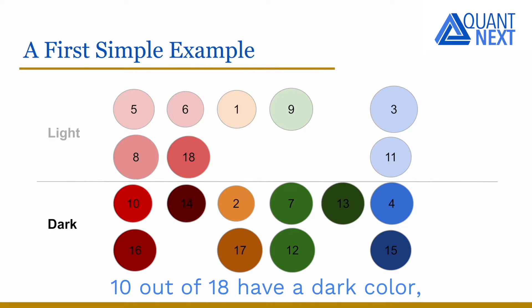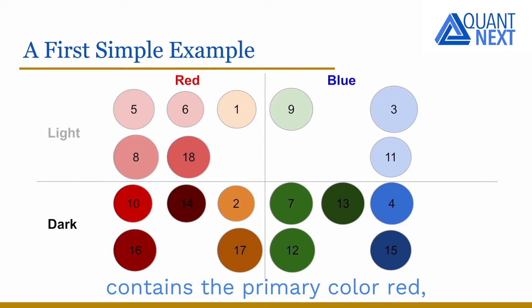10 out of 18 have a dark color, 8 have a light color. The color of 10 of them contains the primary color red, while 8 contains the primary color blue. Orange is a mix of red and yellow, while green is a mix of blue and yellow, so that's why orange is classified with the red and green is classified with the blue. And 7 out of 18 actually contains some yellow.